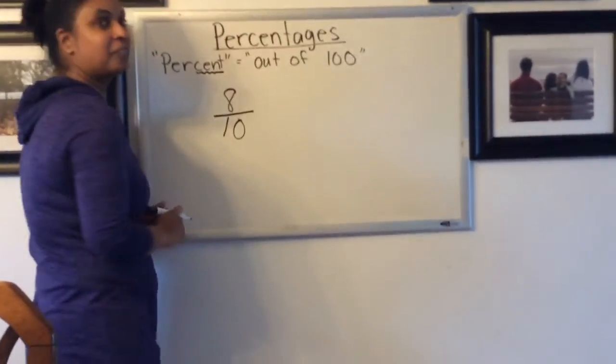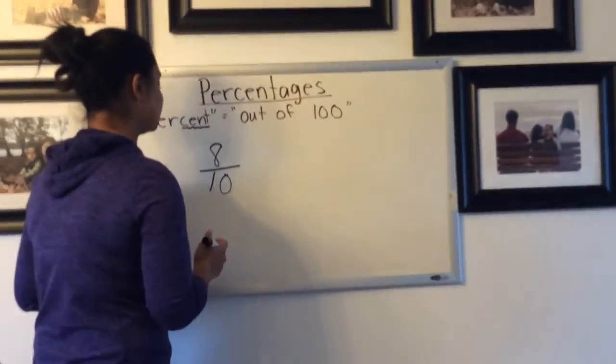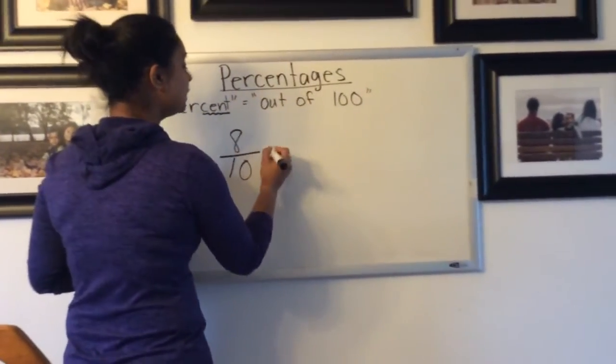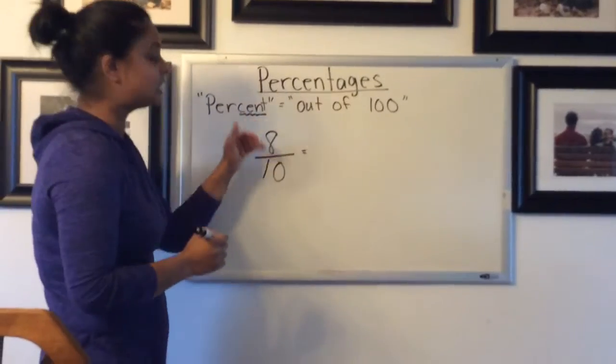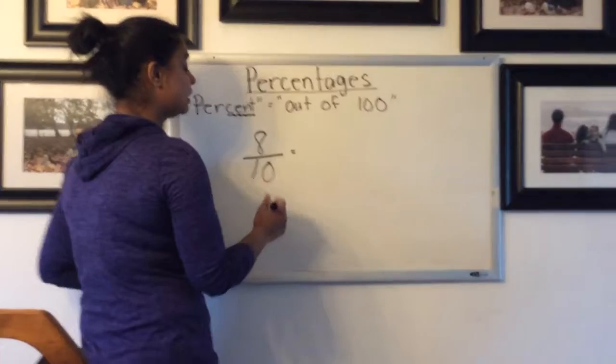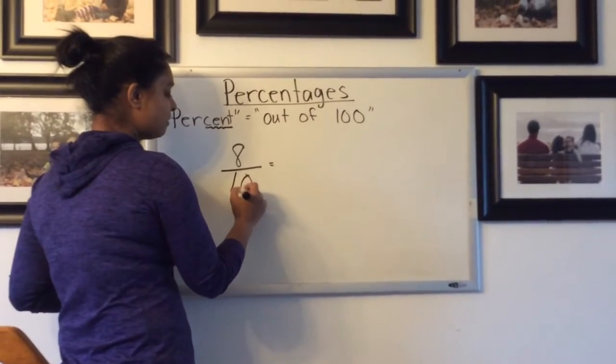So let's say you have 8 out of 10 on a spelling test or a math test. Already I can tell you did pretty well. You didn't get 100% because that would be 10 out of 10. 10 out of 10 would be the whole thing or 100%. But it looks like you still did pretty well.